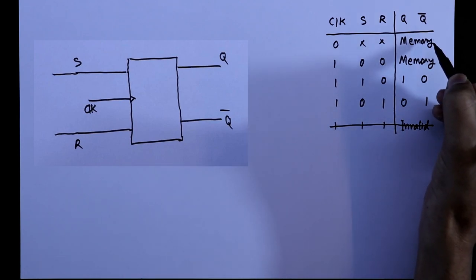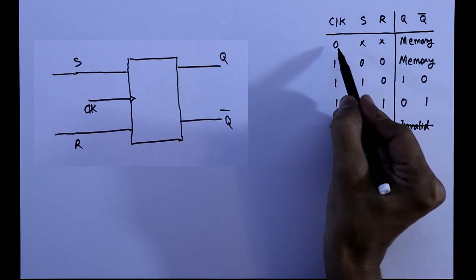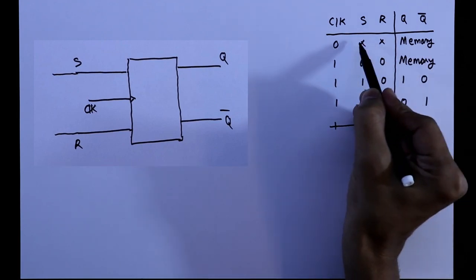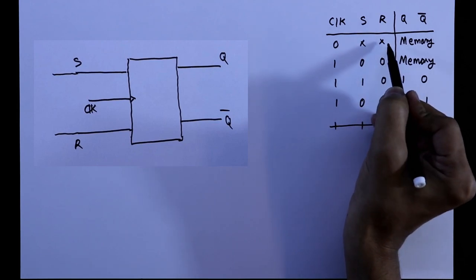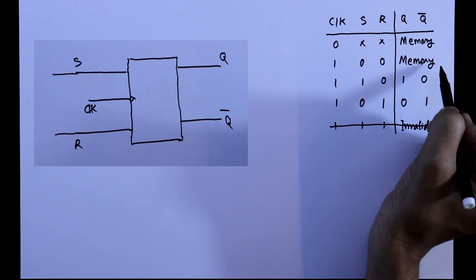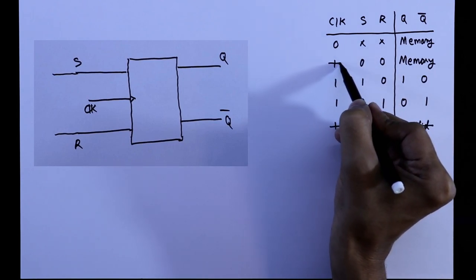Here it is memory and here also it is memory. When clock is 0 we will get memory and it doesn't matter whether S is 0 or R is 0. So to get the memory we simply keep the clock 0. So we don't need this.